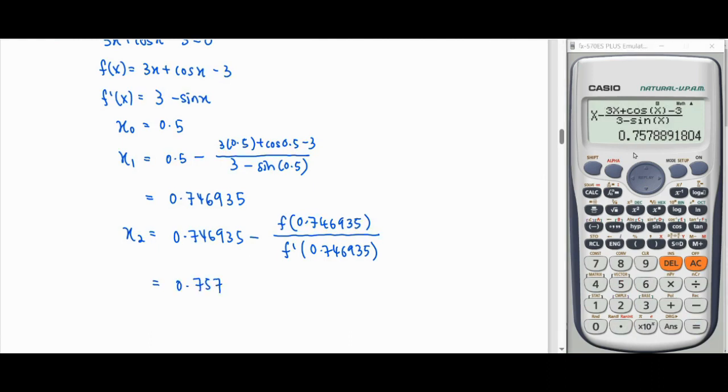And equal. So 0.75, 7, 8. Add one, 2, 8, 9, 1, so 0.7589.